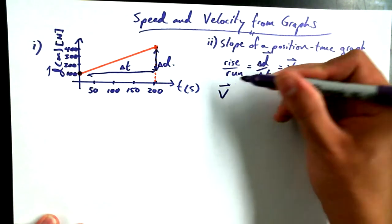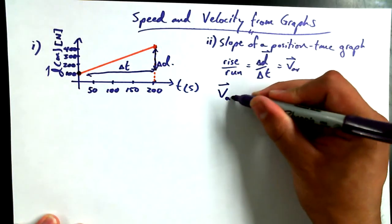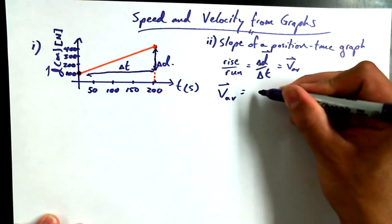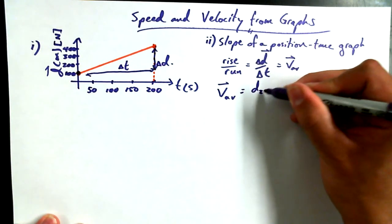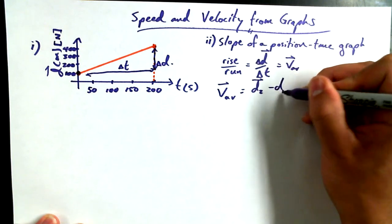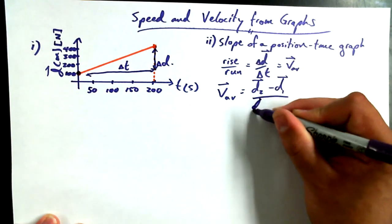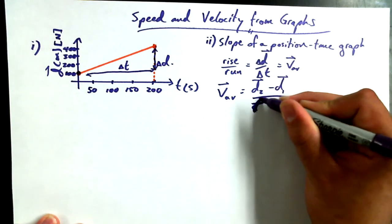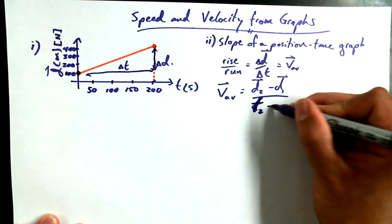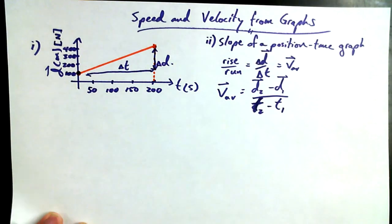So I want to express it again a little bit nicer. V-Average is equal to delta D over delta T, or if we want to really expand it out, D2 minus D1, all over T2 minus T1.